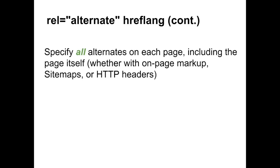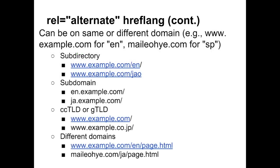When you implement rel alternate hreflang, all alternates of the URL — including the URL itself — should be declared, whether that's with on-page markup, sitemaps, or HTTP headers. The alternate language versions can be on the same or different domains, on different subdirectories, subdomains, ccTLDs, or gTLDs. If you have the option, however, we recommend keeping the alternate versions in a similar URL structure, as that will aid our crawling and indexing heuristics.